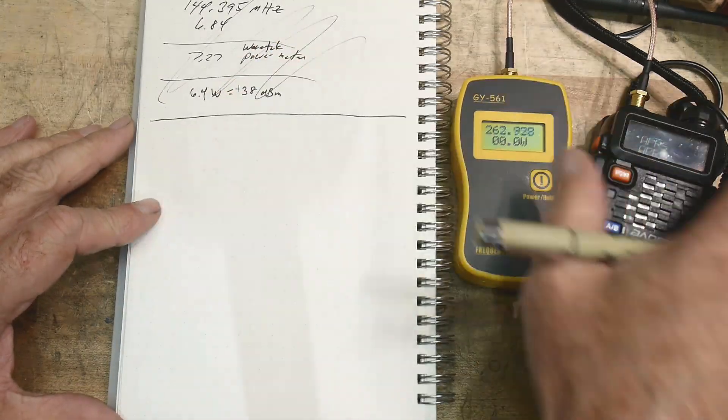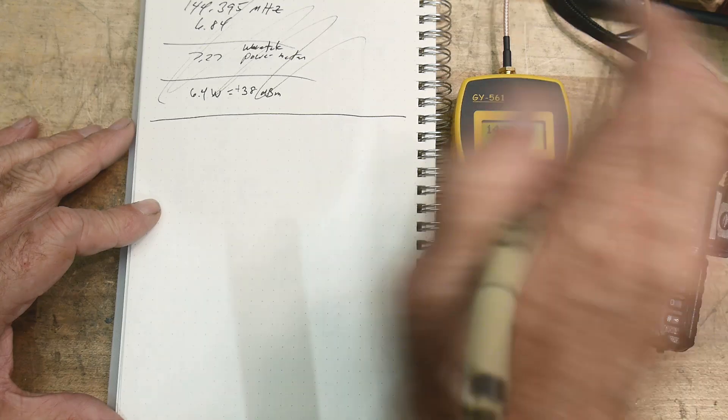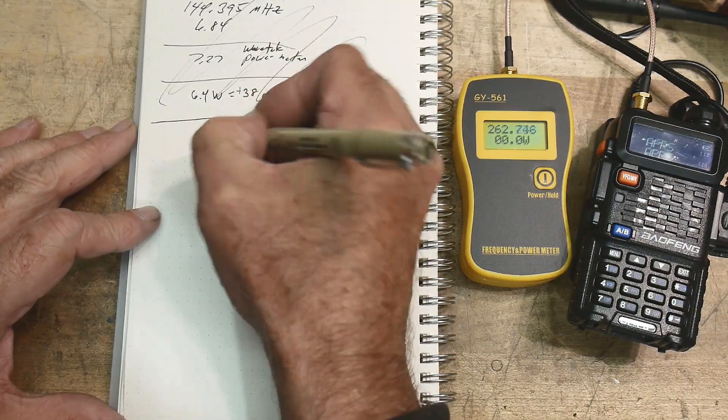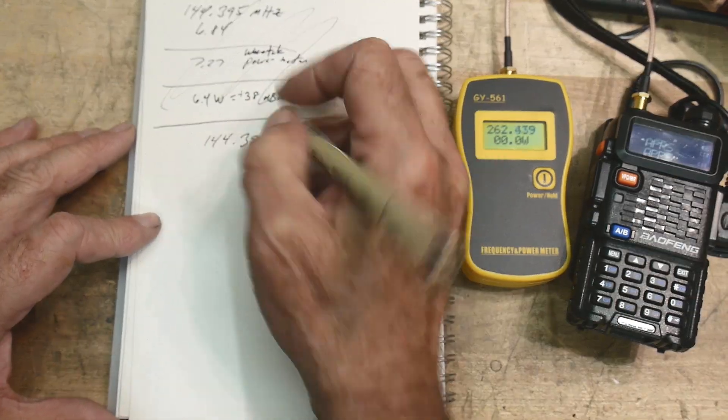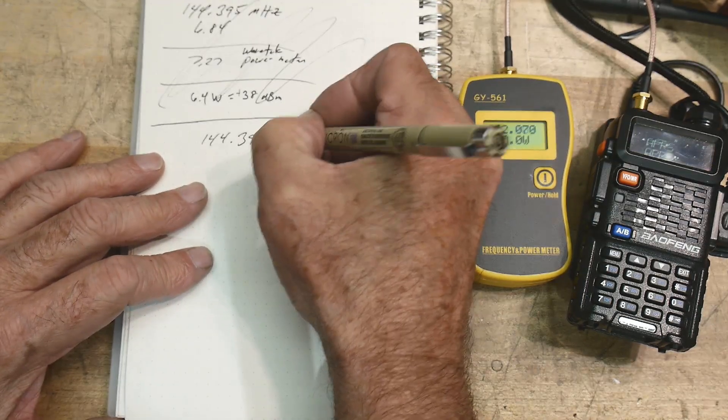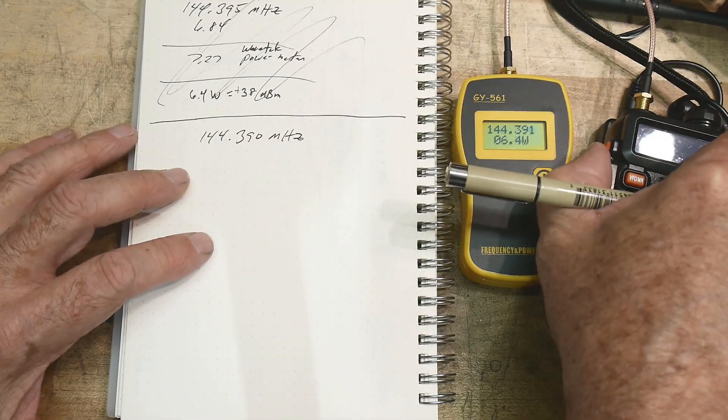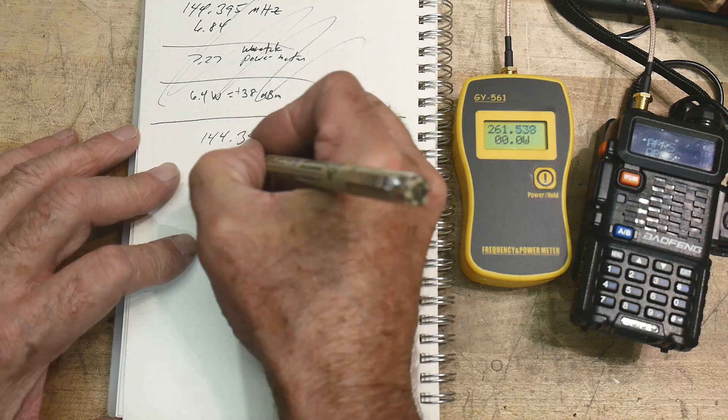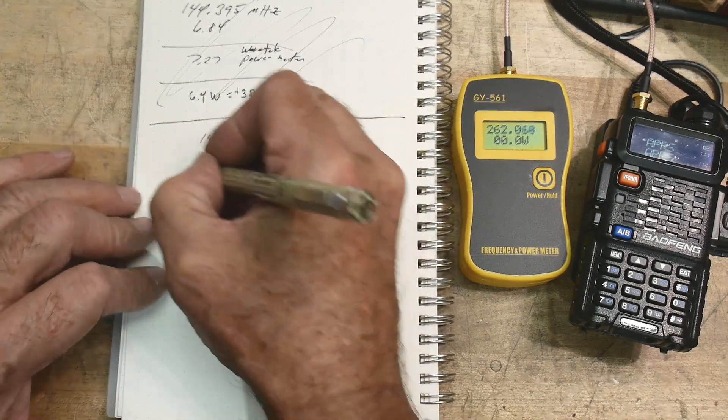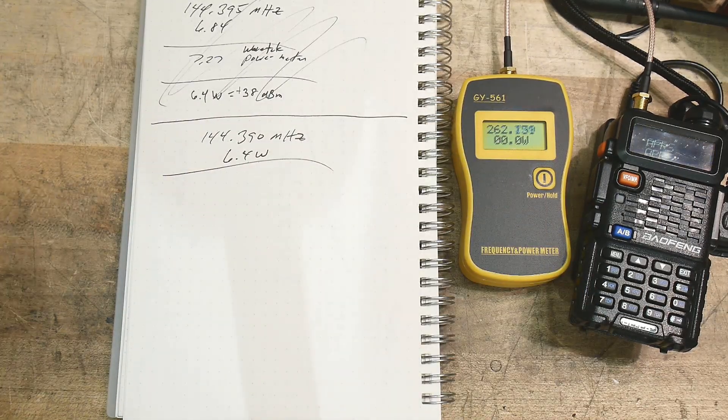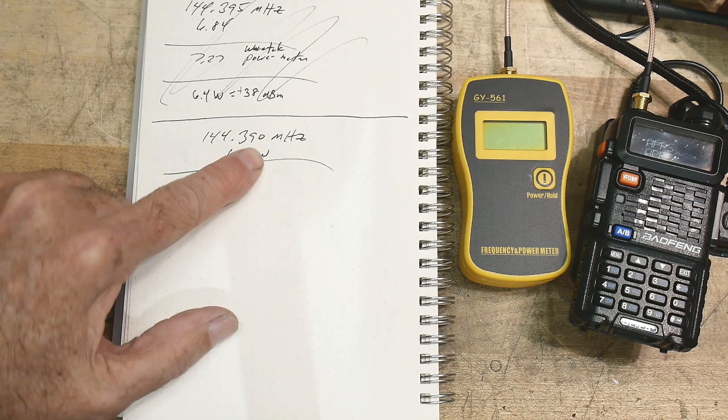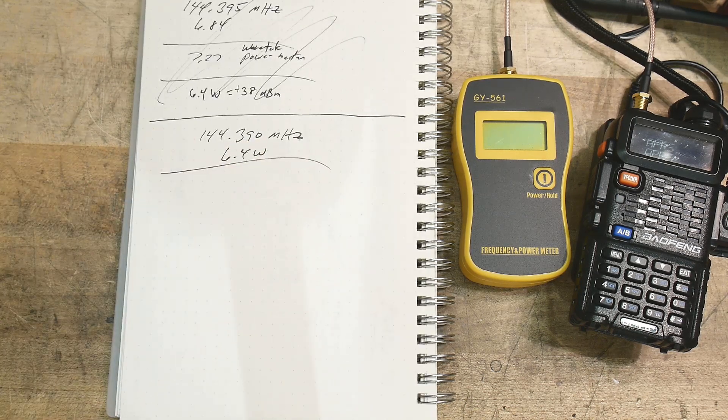So ignore this. I did it once before off camera to make sure I knew what I was doing. So that was, let's do it again, 144.390 megahertz, and it said 6.4 watts. So it's off in megahertz. Let's see if it's off in watts or not.